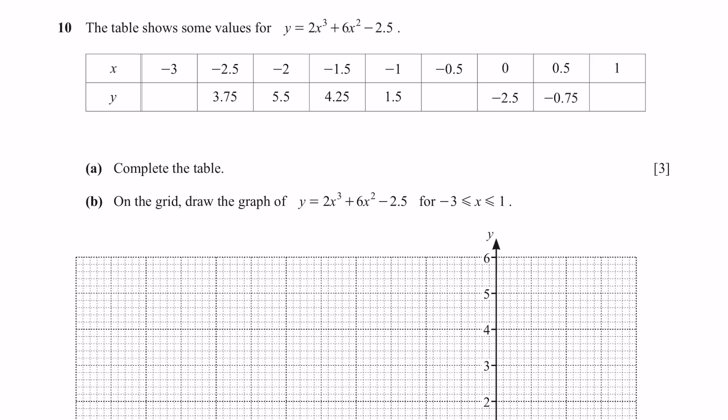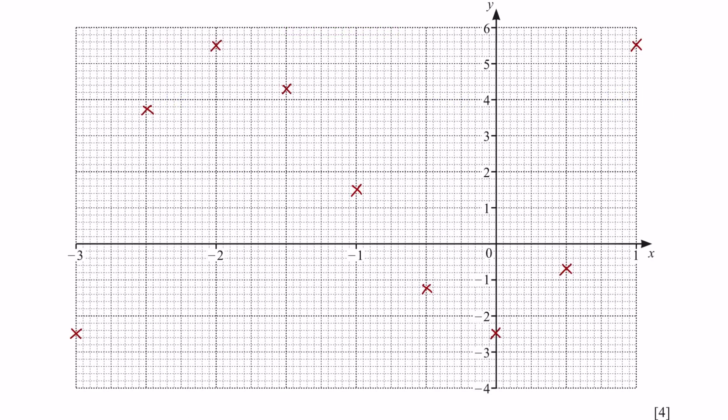Question 10. The table shows some values for this equation. Part A is asking you to complete the table. So this is pretty simple. You're going to take the value of x and substitute it in your equation. And when x is negative 3, the value of y is negative 2.5. And now we're going to repeat for value of x equals negative 0.5 and 1. Once you have completed the table, you can plot the points on the graph. Make sure you are using a pencil for this type of question. And then proceed to draw a smooth line to connect all the points. Make sure the lines are a smooth curve and you do not use a ruler to connect the dots.